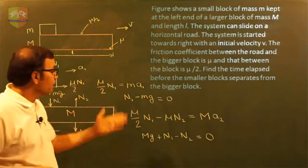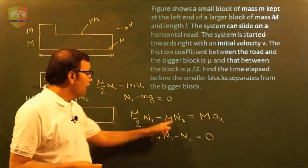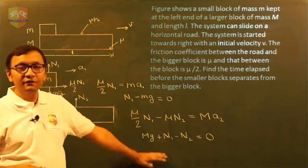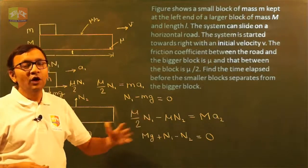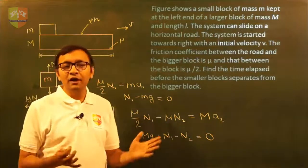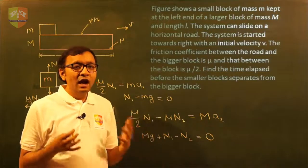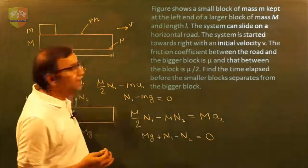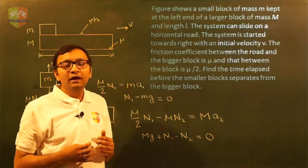We now have four equations and four unknowns: a1, a2, N1, and N2. We can solve these four equations to find the values of a1 and a2. The question asks how much time it takes for small m to topple from — that is, cross over — capital M.